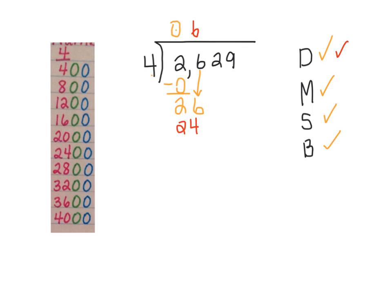6 times 4 is 24. So we divided, we multiplied. Now we subtract, we get 2. And we bring down the next 2.